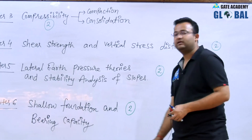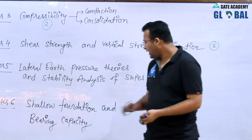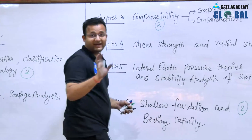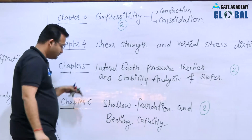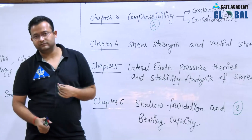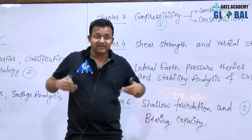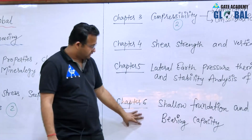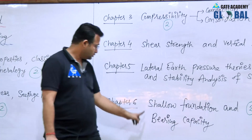Chapter number 6 is shallow foundation and bearing capacity — very, very important. It consistently carries 2 to 3 marks. Chapters 1 through 5 cover soil mechanics, while from chapter 6 onward we enter foundation engineering. Here we learn to estimate the bearing capacity of the soil below the base of a footing, not the structural design of the footing itself.